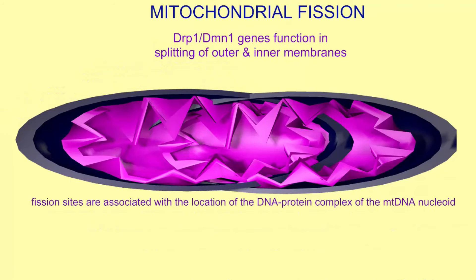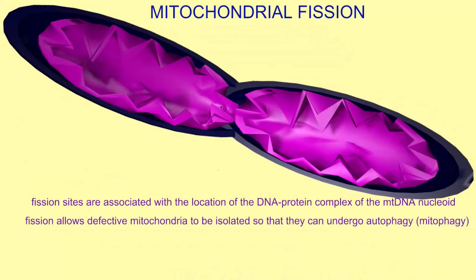In a normal cell, there is a balance which exists between the fission of mitochondria and their fusion. For example, regulating the cell cycle requires maintaining a balance between mitochondrial fission and fusion. The loss of this balance may actually be a factor in aging.